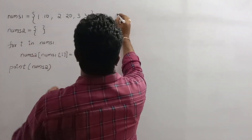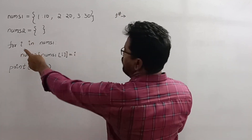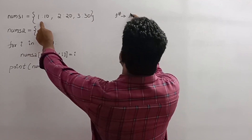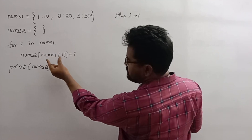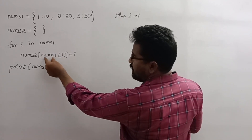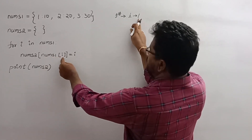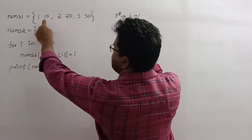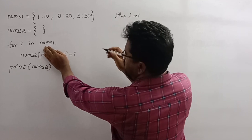Let's take the first iteration. The first time, i value is 1. Now let's see the internal part. The expression is nums1[i]. nums1[i] means i is 1, so nums1[1] — and in the dictionary, the value there is 10. That means this expression is replaced by 10.